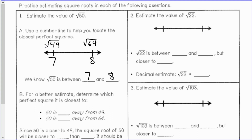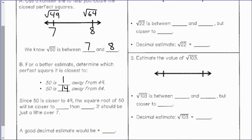If I want a better estimate, I can see how close the square root of 50 is to 49 and to 64. 50 is 1 away from 49 and 14 away from 64. Looking back at my number line, the square root of 50 is only one space away from the square root of 49, so it's going to be closer to 7 than to 8 — just a little over 7. A good decimal estimate would be about 7.1.